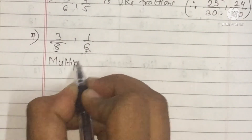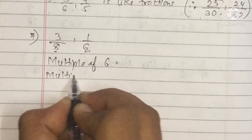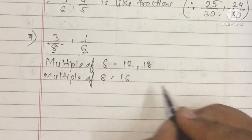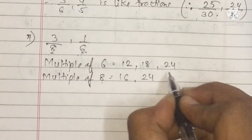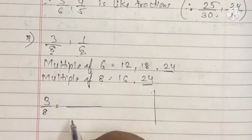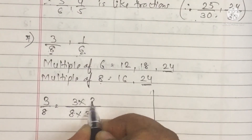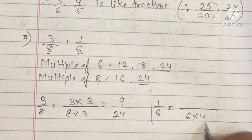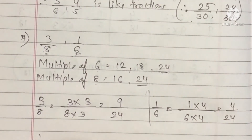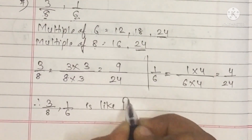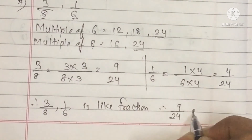Sum number 7: 3 upon 8 and 1 upon 6. We find the common multiple of 6 and 8. Multiples of 6: 6, 12, 18, 24; and 8 threes are also 24 — so 24 is common. For 3 upon 8, multiply by 3: 3 threes are 9 and 8 threes are 24. For 1 upon 6, multiply by 4: 1 four is 4 and 6 fours are 24. So 3 upon 8 and 1 upon 6 become like fractions: 9 upon 24 and 4 upon 24.